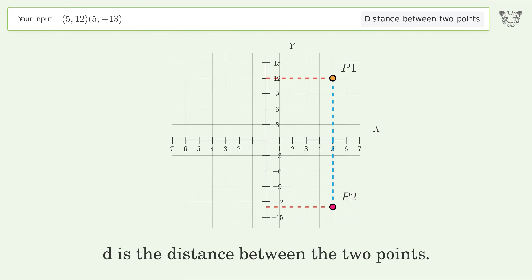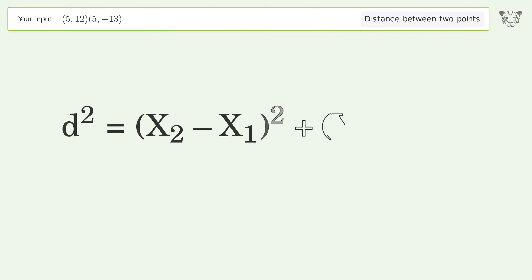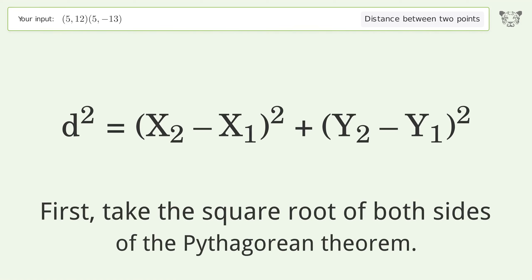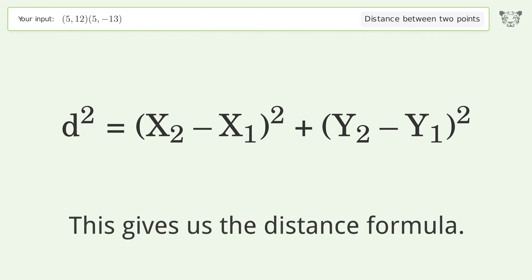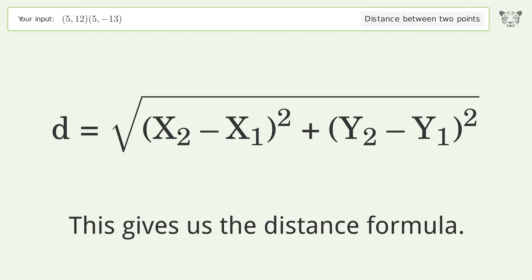d is the distance between the two points. First, take the square root of both sides of the Pythagorean theorem. This gives us the distance formula.